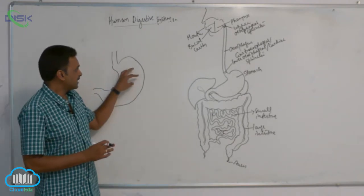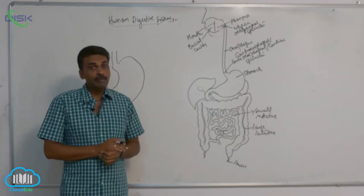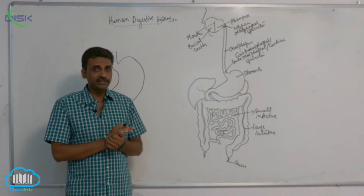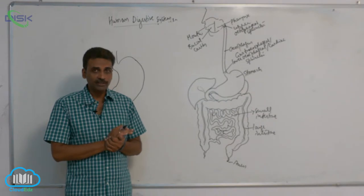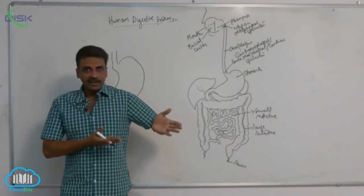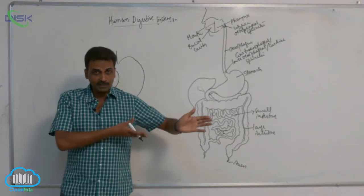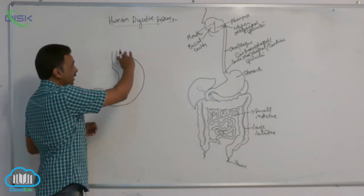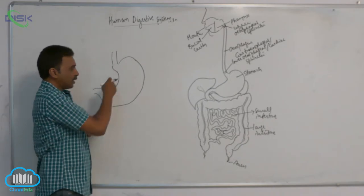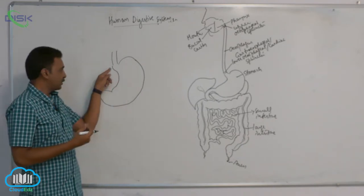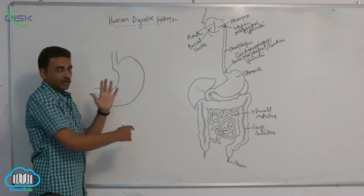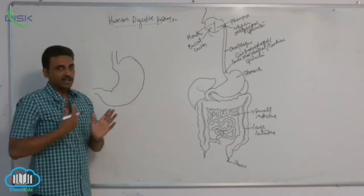Inside the stomach, chemical and mechanical digestion occurs. If you see the structure of the stomach, on the left side you can see a greater curvature, and on the right side you can see a lesser curvature. So it is more curved on the left side and less curved on the right side.